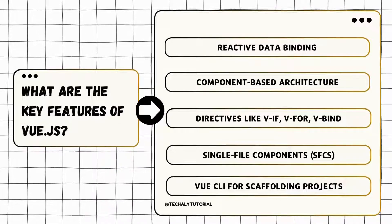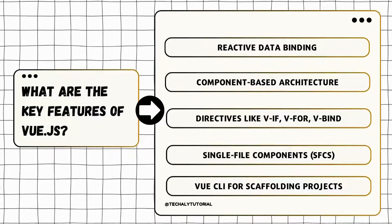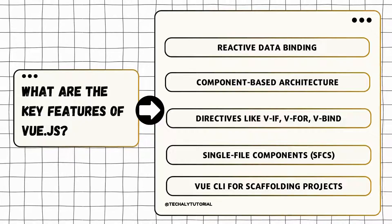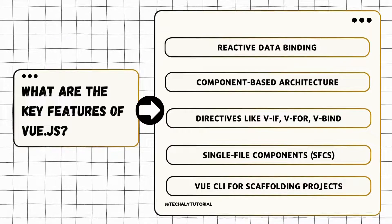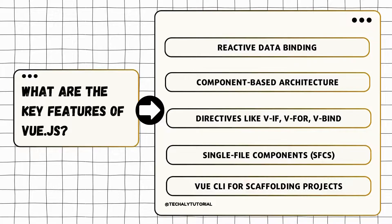Key features of Vue.js: reactive data binding syncs data between the model and the view. Component-based architecture enables encapsulation and reusability of UI elements. Directives are special attributes like v-if, v-for, v-bind, etc., to perform operations in the template.